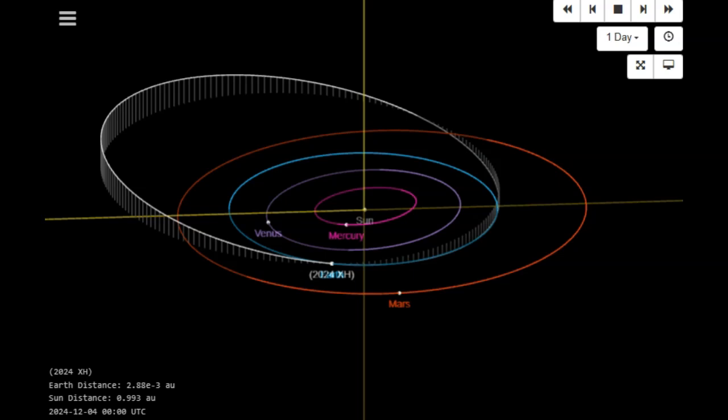So we're probably looking at 2024 XH being a meteor that may or may not turn into a meteorite. We're going to have to look at the condition code. I know that this information was just released.